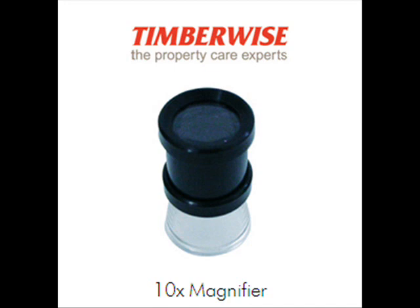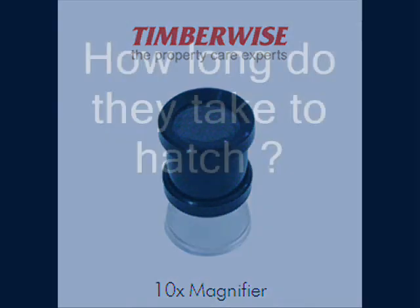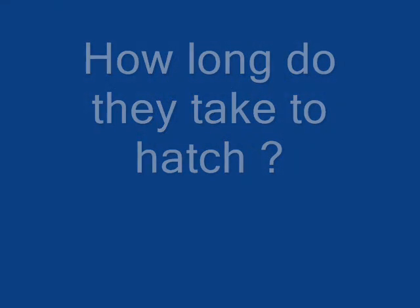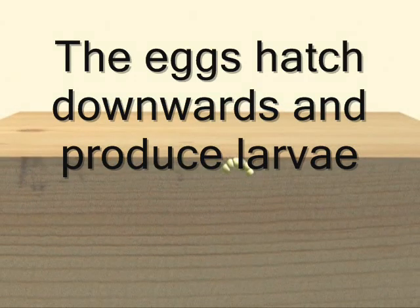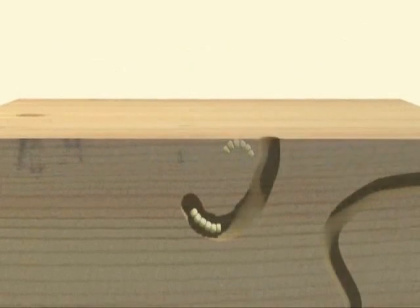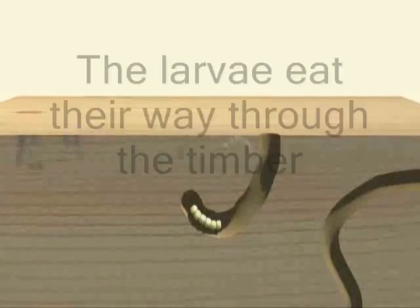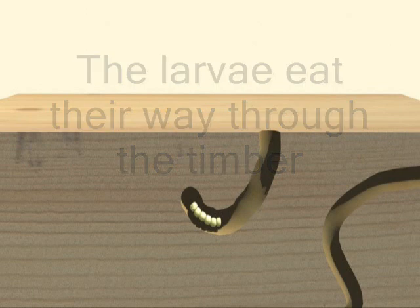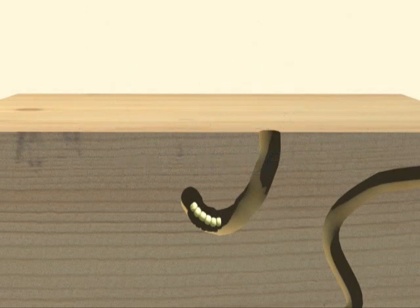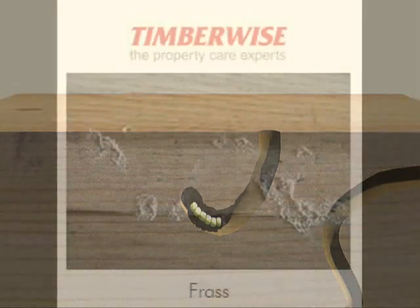And how long do they take to hatch? The young larvae hatch downwards after about five weeks and then tunnel their way into the wood. It then spends anywhere between two and five years tunneling, eating its way up and down the grain of the timber. It is during this stage that structural damage actually occurs. And often dust is seen around infested timber. Yes, it is. That dust, or as we call it, frass, is the waste product of the woodworm.